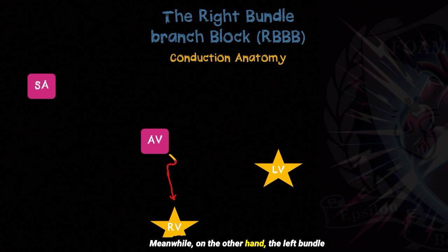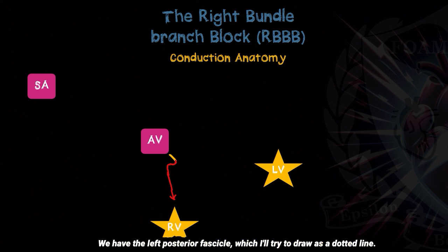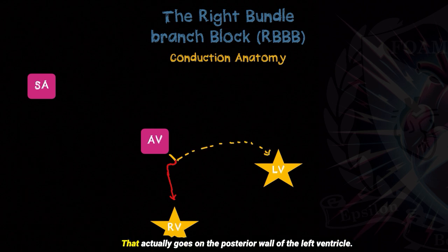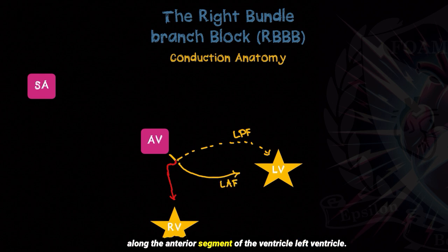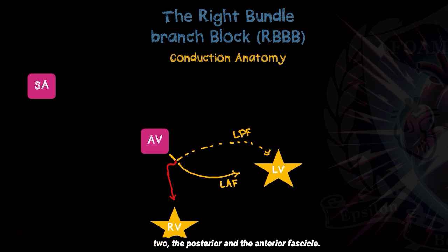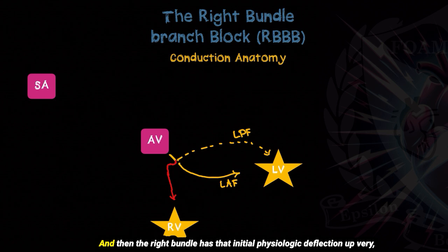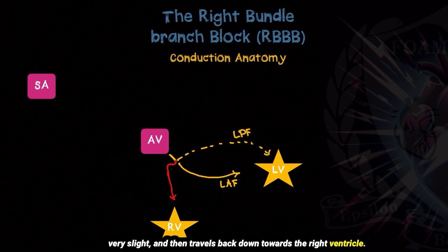On the other hand, the left bundle actually separates into two different fascicles. We have the left posterior fascicle, which goes on the posterior wall of the left ventricle, and then we also have the left anterior fascicle, which runs along the anterior segment of the left ventricle. So just remember, the left bundle splits into two — the posterior and the anterior fascicle. And the right bundle has that initial physiologic deflection upward, very slight, and then travels back down towards the right ventricle.